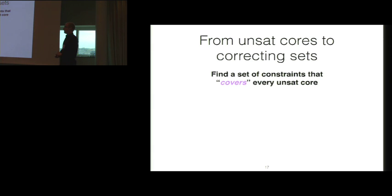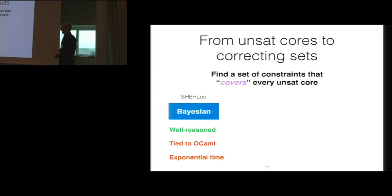Once you have a solver that produces unsatisfiable cores, you have to address the next thing which is how do we go from a set of unsatisfiable cores to a correcting set. Essentially, what you do at each iteration of the algorithm is you guess at a correcting set the requirement being that it just has to cover at least one constraint from each unsatisfiable core if you hope to make the system satisfiable. And our framework is actually agnostic to the algorithm you pick here. You can plug in your favorite. So Sherlock uses a very complicated and very intelligent algorithm based on Bayesian reasoning. So it's very well reasoned. It produces great error reports. It is a little bit tied to the OCaml type system in particular. It's difficult to generalize this to other languages. And it requires exponential time which is also a bit of a downside.